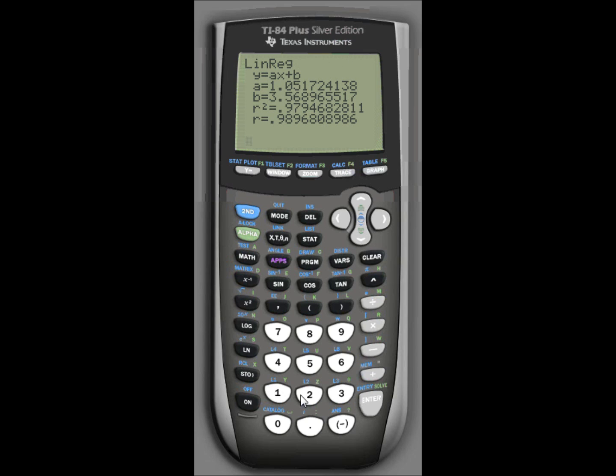Here, it's giving you the equation. The value A is about 1.05, so we have Y equals 1.05X plus B, B is 3.59, so we have Y equals 1.05X plus 3.57.